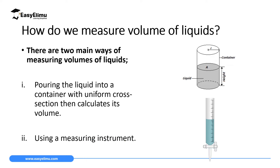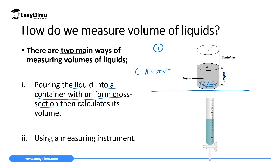We can measure the volume of liquids in two main ways. The first is using a container with a uniform cross-section. We pour the liquid into such a container — the cross-sectional area is uniform and known. Since liquids take the shape of the container, if we know the radius we can calculate the base area as π r², then multiply by the height the liquid reaches to get the volume.